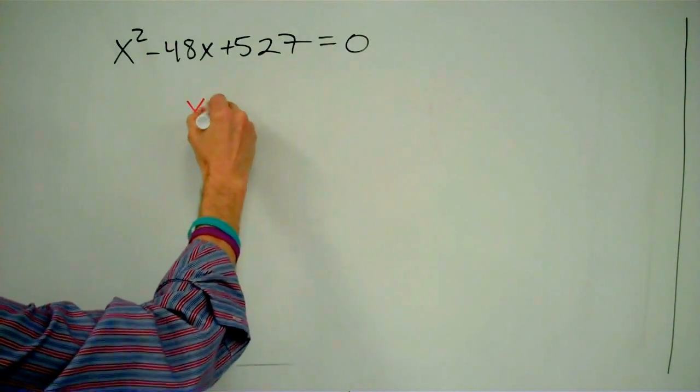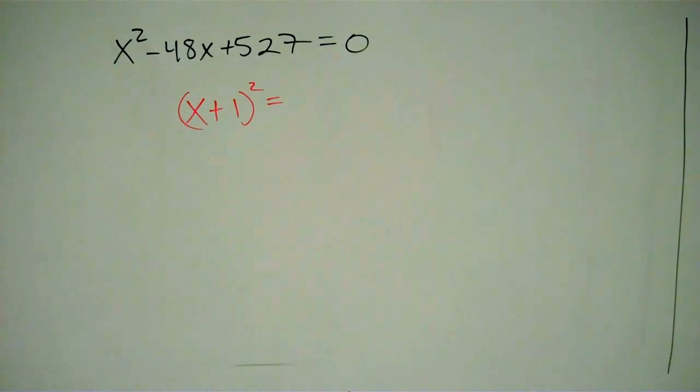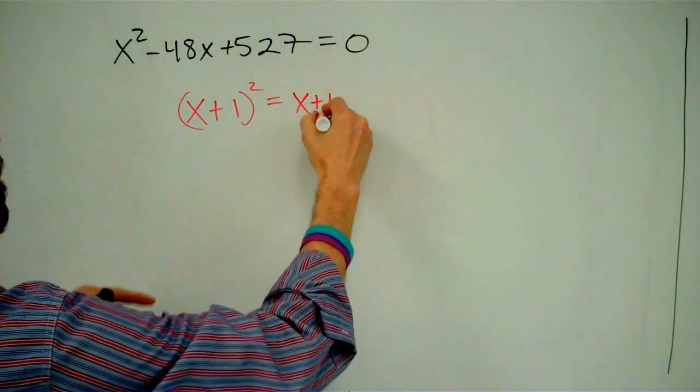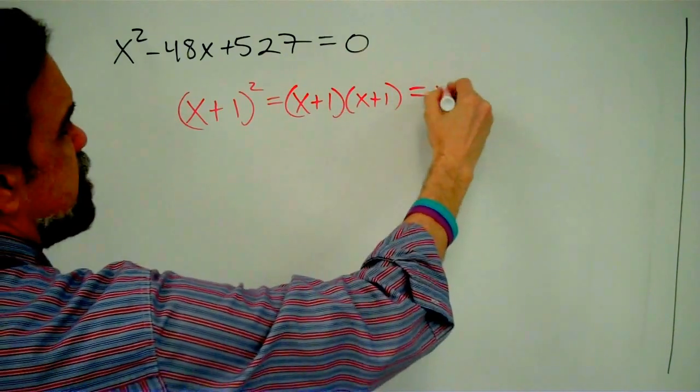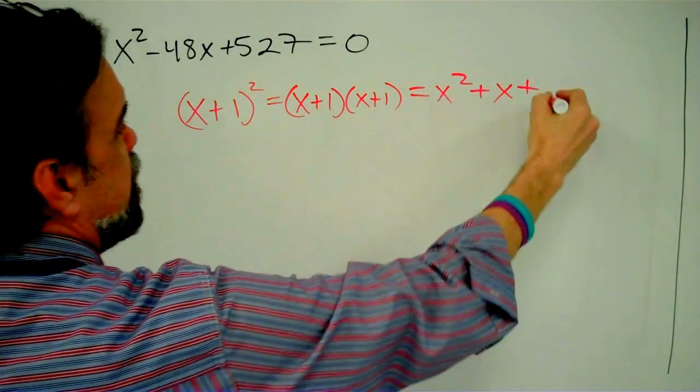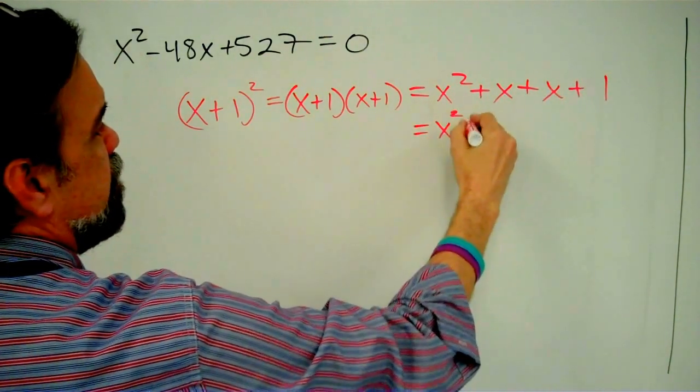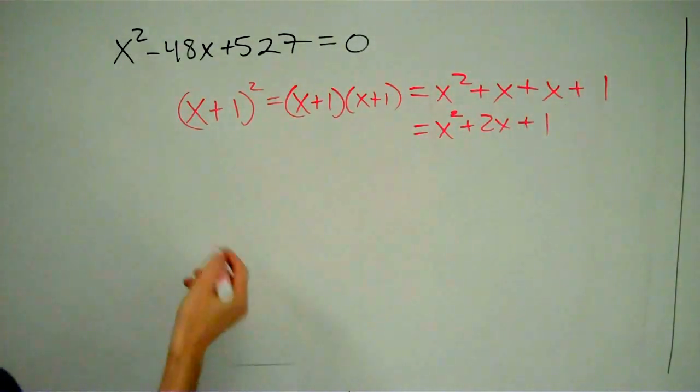Let's look at (x + 1)². Well, (x + 1)² is (x + 1) times (x + 1). So that's going to be x² + x plus another x + 1, which ends up being x² + 2x + 1. Let's look at another example.